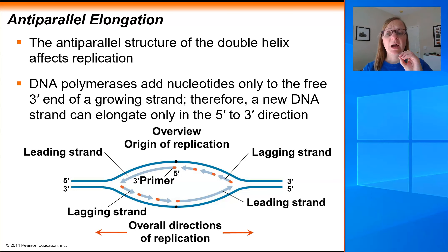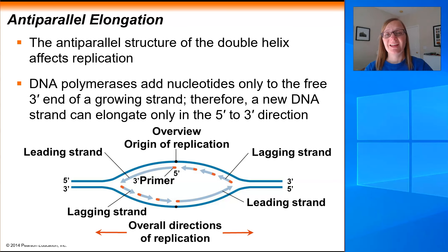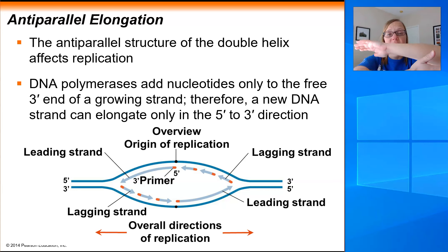As we go through DNA replication, there are some challenges that cells encounter when trying to replicate their DNA. One of these challenges comes from the fact that DNA is double-stranded and these two strands run in an anti-parallel fashion. So the five prime end of one strand is next to the three prime end of the other, and vice versa on the other end as well.